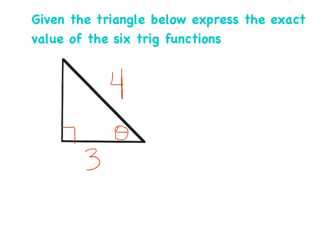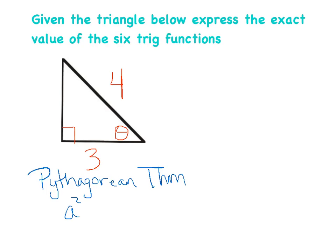Here's our first example: given a triangle, express the values of all six trig functions. First, label every side of the triangle. We know two sides, so we use the Pythagorean theorem to find the third. The Pythagorean theorem is a² + b² = c², where c² must be the hypotenuse.